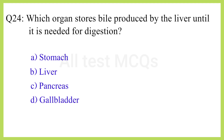Q24. Which organ stores bile produced by the liver until it is needed for digestion? The correct answer is option D: Gallbladder.